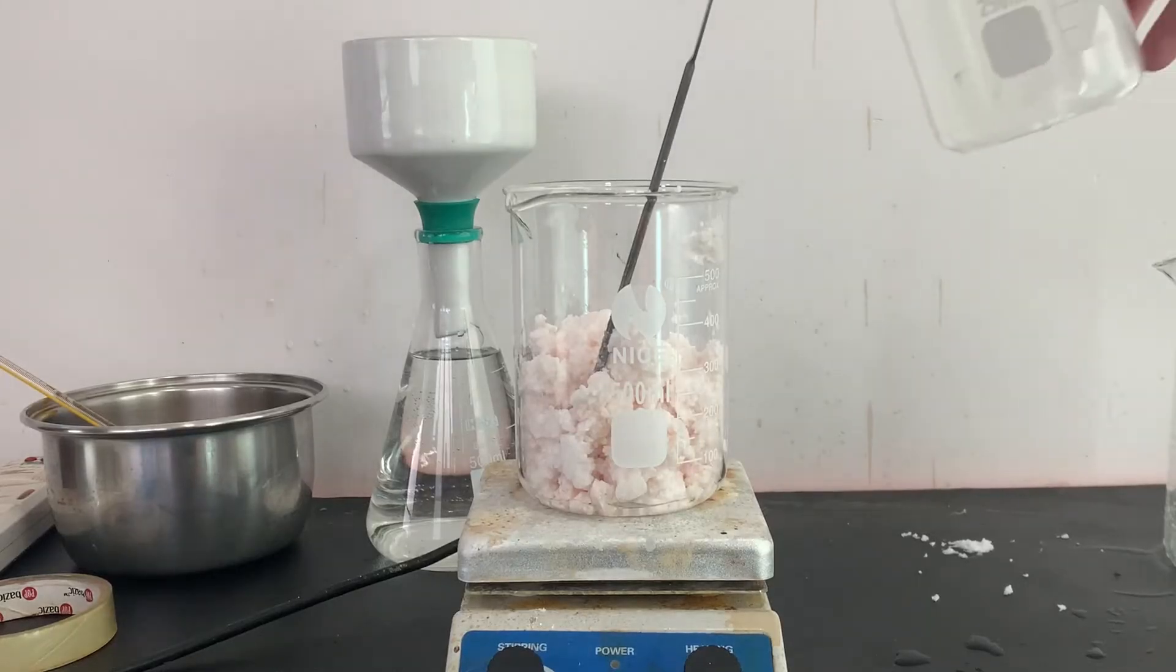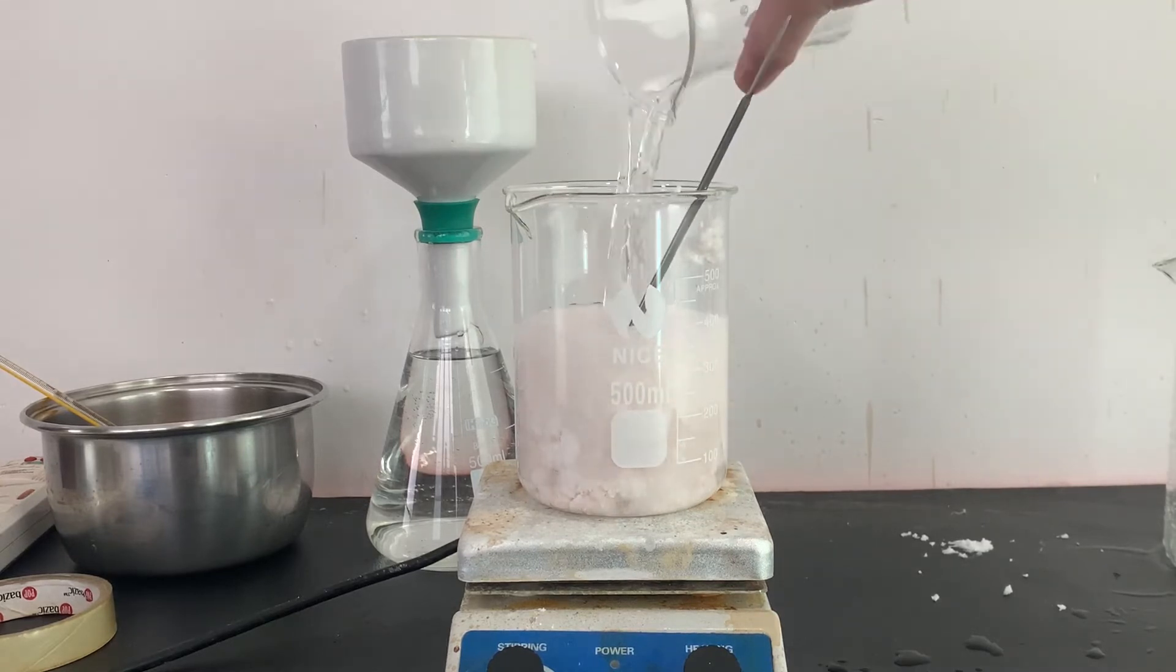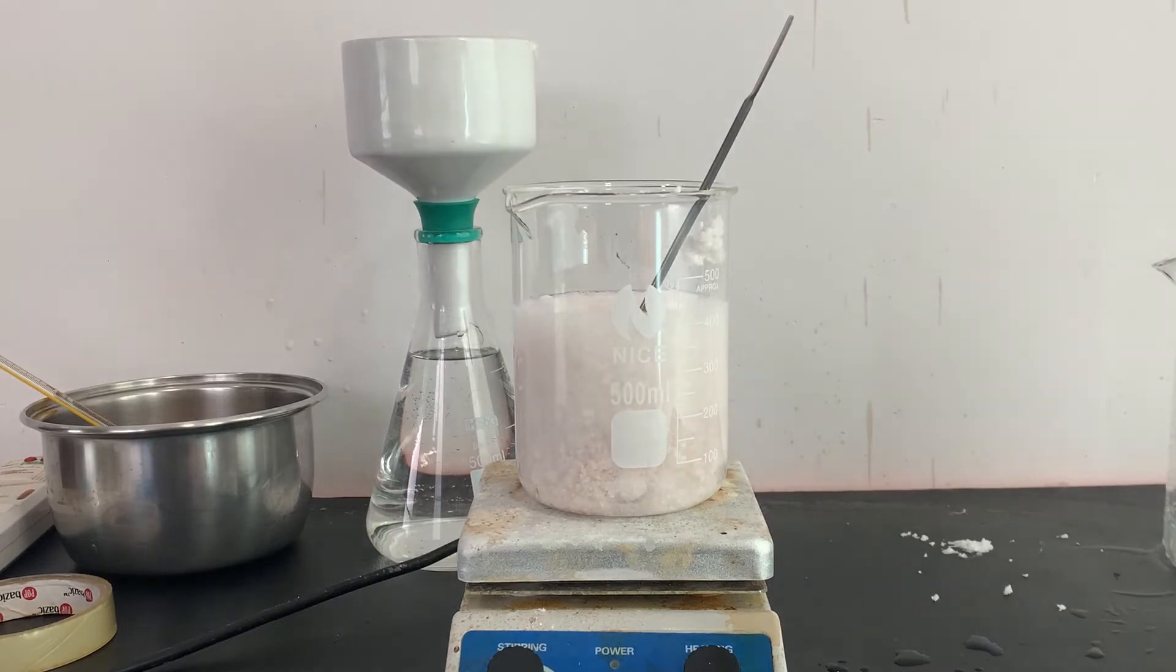I then vacuum filtered the acetanilide to separate it and transferred it to a 500 ml beaker. I will then purify the crude product by recrystallization.